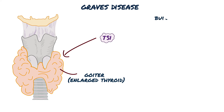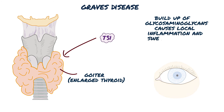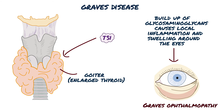The buildup of glycosaminoglycans causes local inflammation and swelling around the eyes, called Graves' ophthalmopathy. The ophthalmopathy causes exophthalmos, or outward bulging of the eyeball.